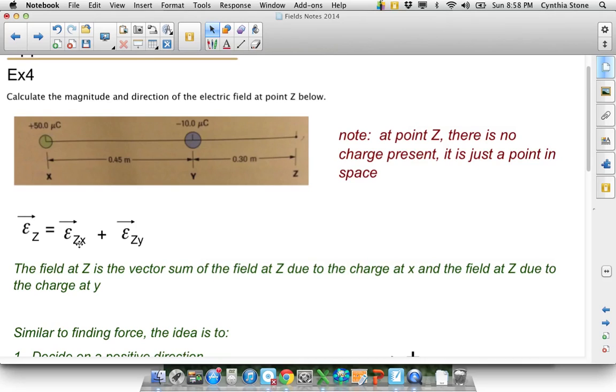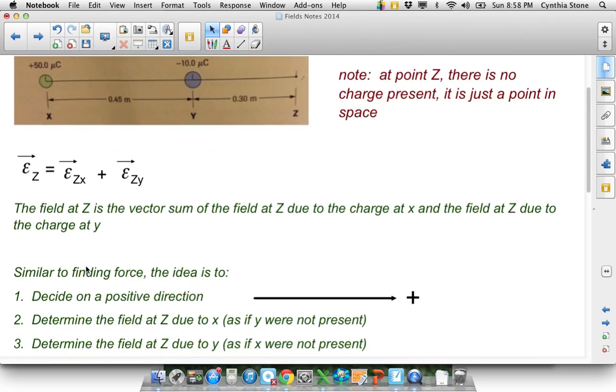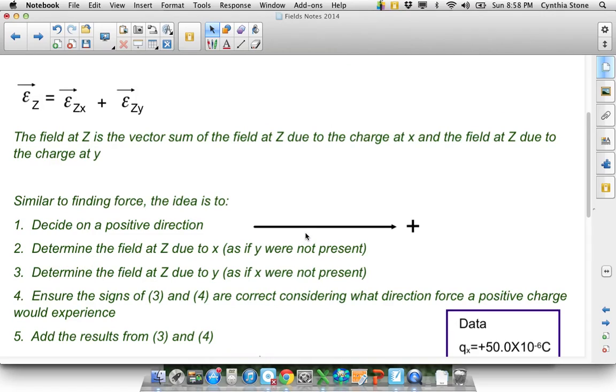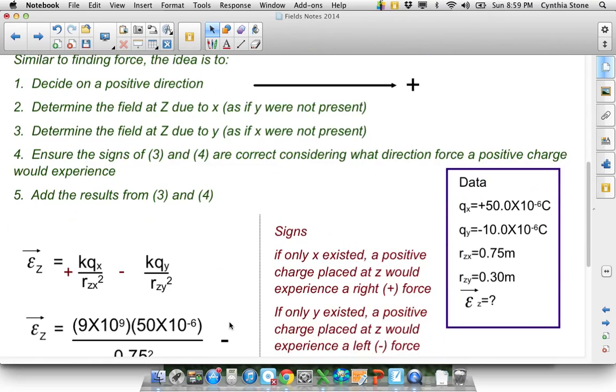But you just do this vector. You do the same thing like we did before. You decide on a positive direction. I call, as usual, I call right positive. And you basically say, I'm going to find the field at Z due to the first one and then due to Y, treating them separately. Make sure I use the right signs and then add them up and get an answer.